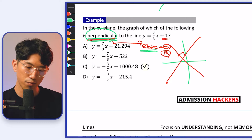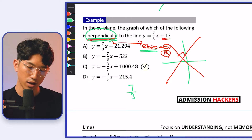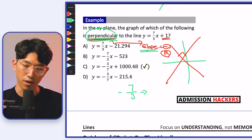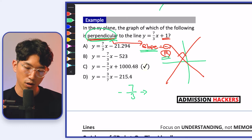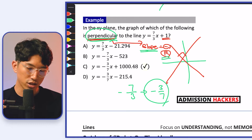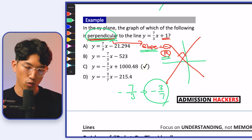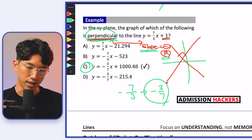Our slope right now is 7/3. If we apply the negative, it becomes negative 7/3. If we apply the reciprocal — which just means to flip it — it becomes negative 3/7. So which equation has negative 3/7 as the slope? Only choice C.